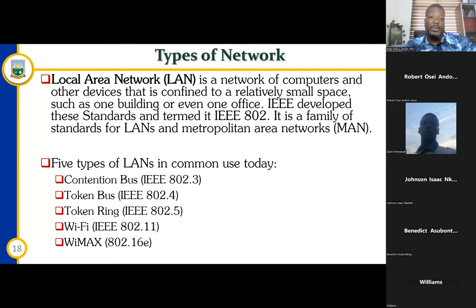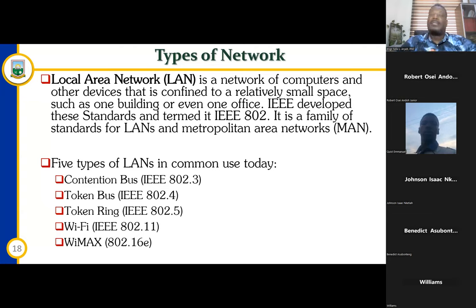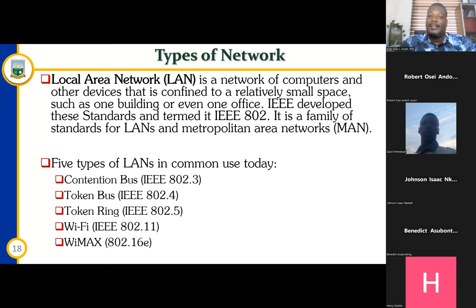Let's pick the first one, which we term as the local area network — LAN. It's a network of computers and other devices that is confined to a relatively small space, such as one building or even one office. Just like when you go to a cafe — a small building with so many computers all connected together, about five to ten computers. You can have a local area network comprising even just two computers. Once you're able to network them together, it can serve as a local area network.